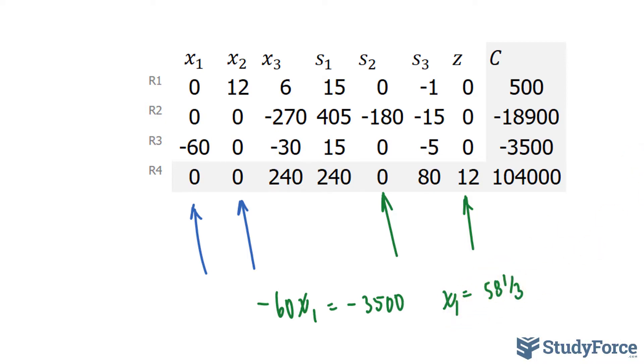And if you recall, x sub 1 refers to the number of acres of potatoes dedicated in this farm. So you need 58 and a third of this farm dedicated to potatoes.